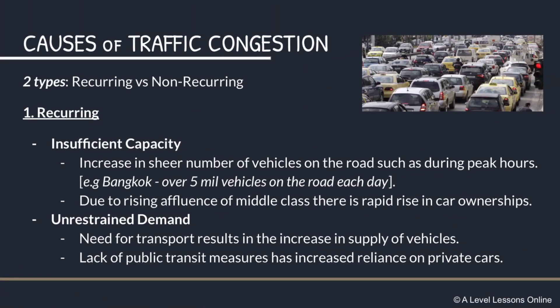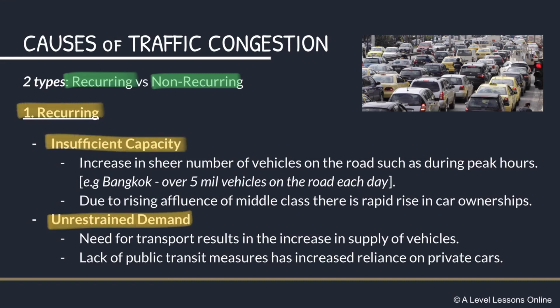There are basically two types of traffic congestion you need to know for your syllabus: recurring and non-recurring. Under the recurring category, you have two main reasons: insufficient capacity and unrestrained demand. Insufficient capacity is when demand exceeds supply — when there is an increase in the sheer number of vehicles, such as during peak hours, there is basically no space on the road for cars at all.